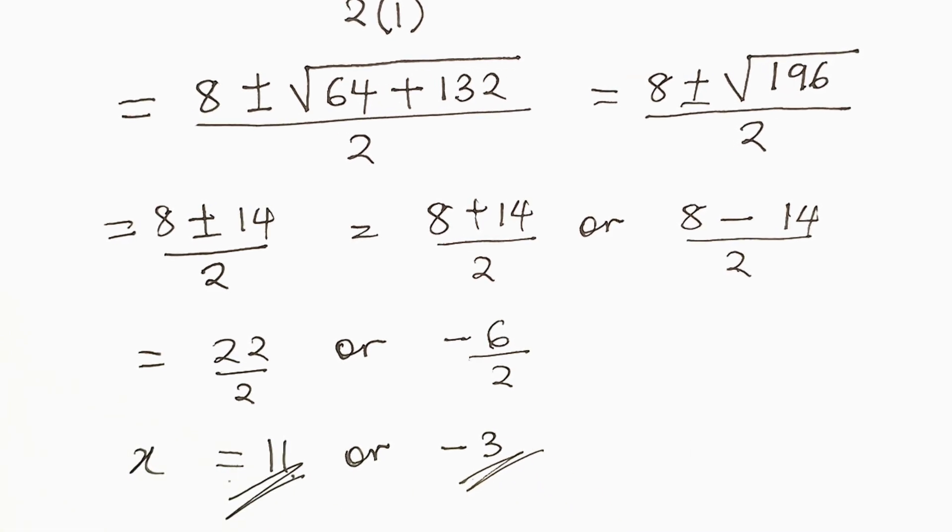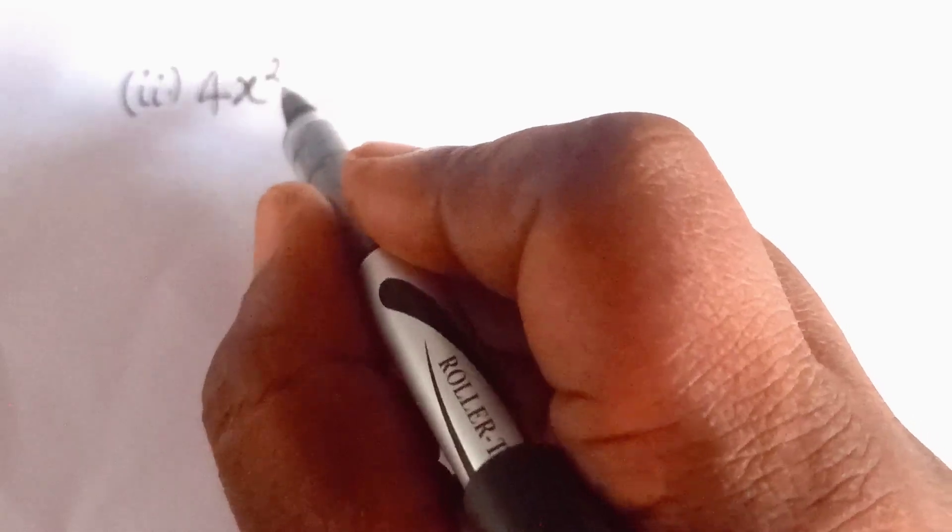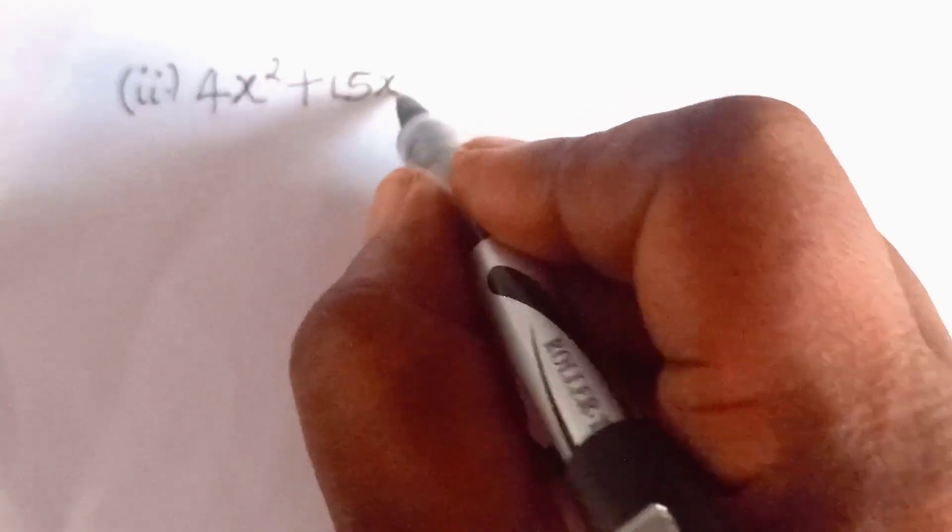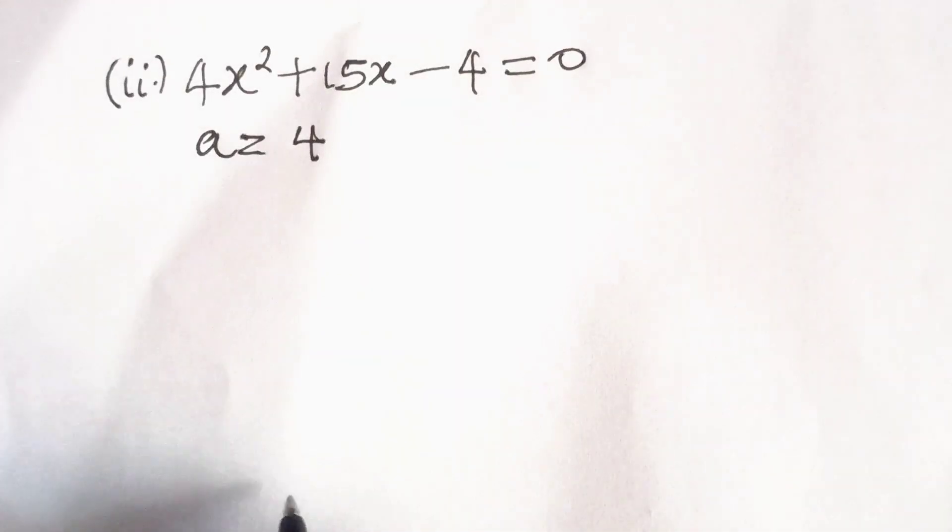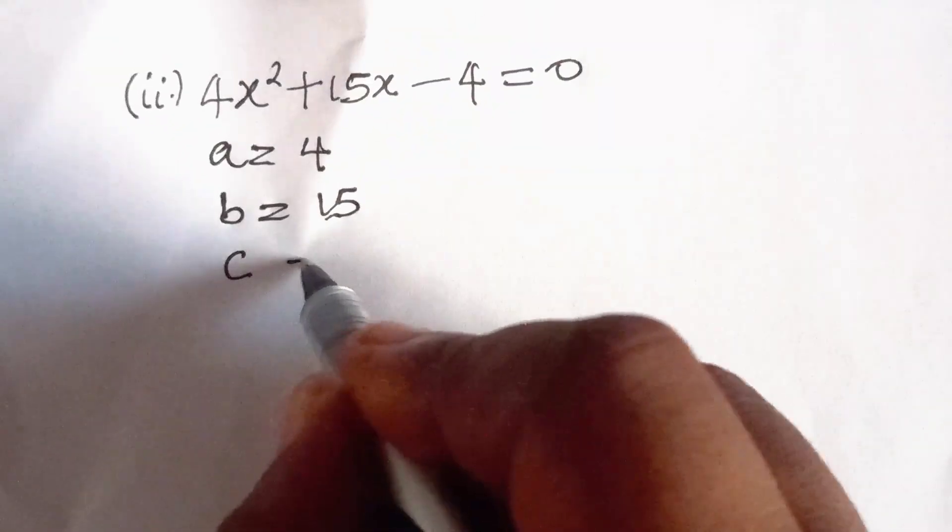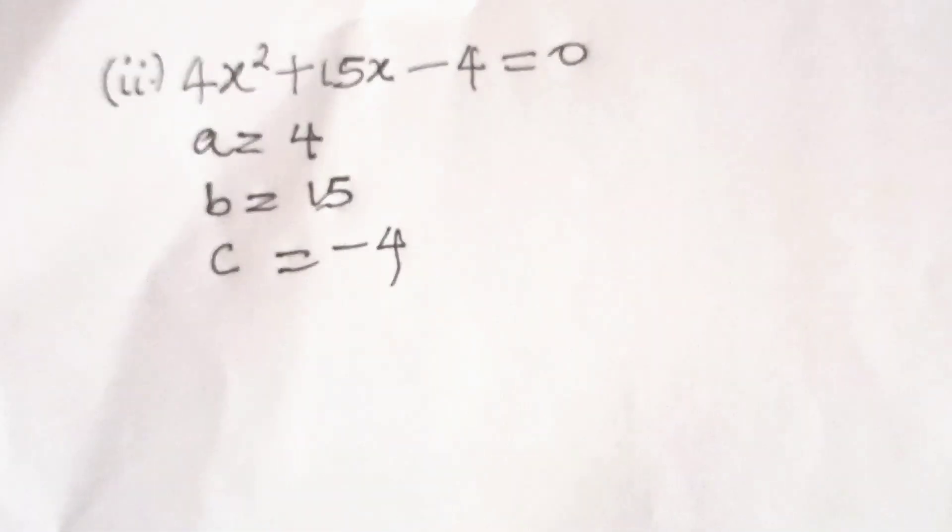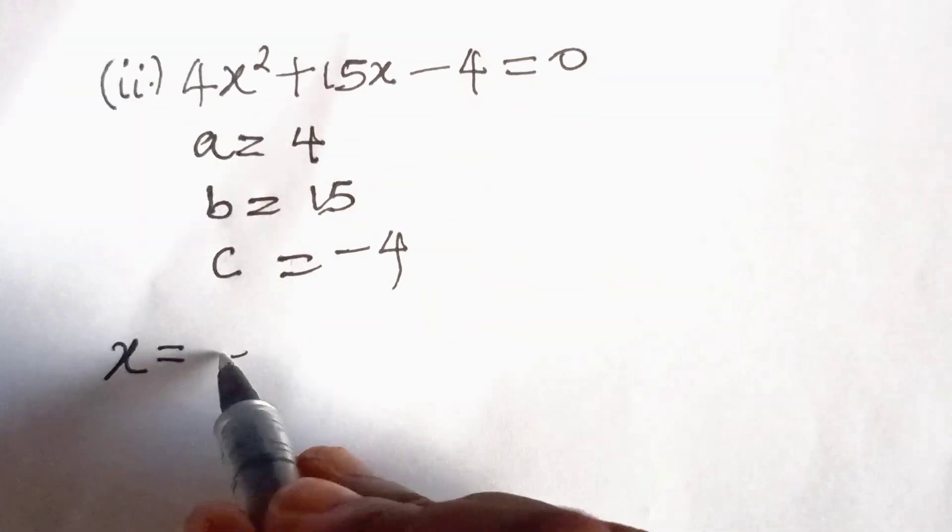Now we will go to the second equation. The second equation is 4x squared plus 15x minus 4 equal to 0. Here a is equal to 4, b is equal to 15, and c is equal to minus 4.